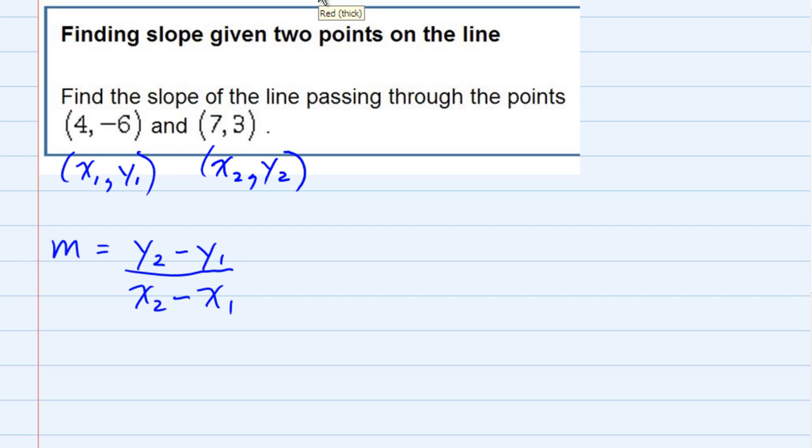We have each one of the numbers to plug into our formula. y₂ would be this one, 3, and we would have to subtract y₁, which is a negative 6. And then in the bottom, the x's, the x₂ would be the 7, and I would have to subtract the x₁, which is the 4.